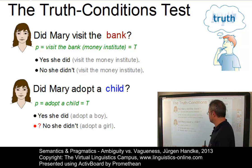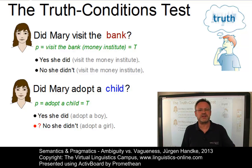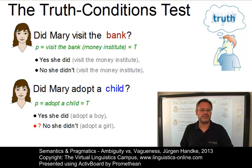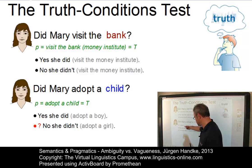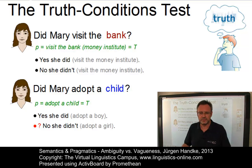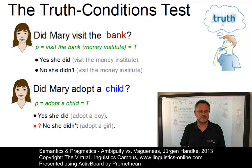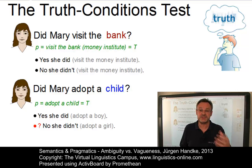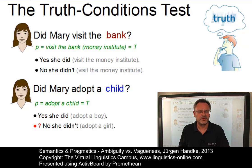If we contrast this with the question 'Did Mary adopt the child?', which involves the vague item 'child', here we could not choose yes and no at the same time as an appropriate answer. Assuming again that adopting a child is true, 'yes she did' could be a reasonable answer, but then 'no she didn't' could not. Hence, if a yes-no question can truthfully be answered with both yes and no, we have a case of ambiguity. If not, we are confronted with the phenomenon of vagueness.